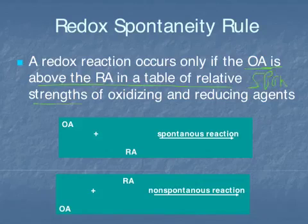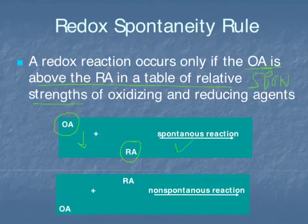Let's look at an example. If our oxidizing agent is above our reducing agent in the table, this is going to be a spontaneous reaction. Conversely, if our oxidizing agent is below our reducing agent, then this will be a non-spontaneous reaction.